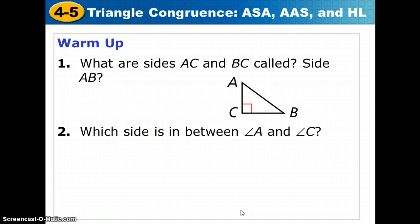So why don't you take a look at these two questions, and we will cover our answers in just a moment. First, what are the sides AC and BC called in this kind of a triangle? They have a special name in this triangle. And also, which side is between angle A and angle C? We will talk about that in just a moment. If you need more time, push pause.